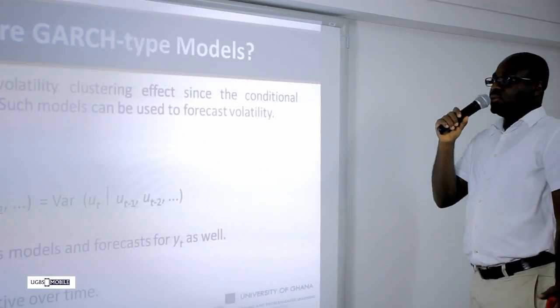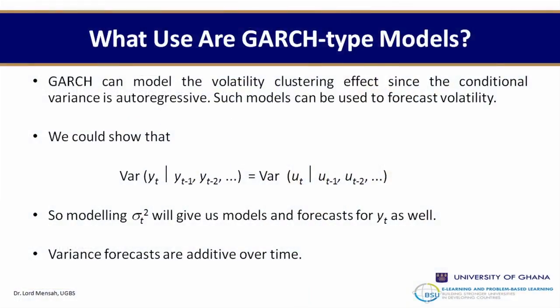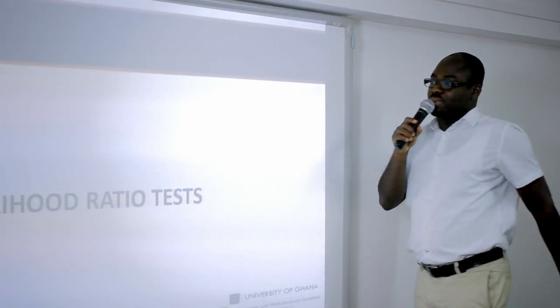What use are GARCH-type models? The GARCH model captures clustering effect since the conditional variance is autoregressive. Such models can be used for forecasting volatility — the dynamics in the movement of asset returns. Modeling sigma_t gives us models and forecasts for Y_t as well. Variance forecasts are additive over time.